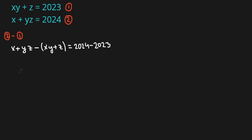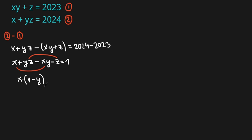Now we have x plus yz minus xy minus z, all equals 1. From x and minus xy we can take out an x, and from yz minus z we can take out a minus z. So we have x times (1 minus y) minus z times (1 minus y), all equals 1.